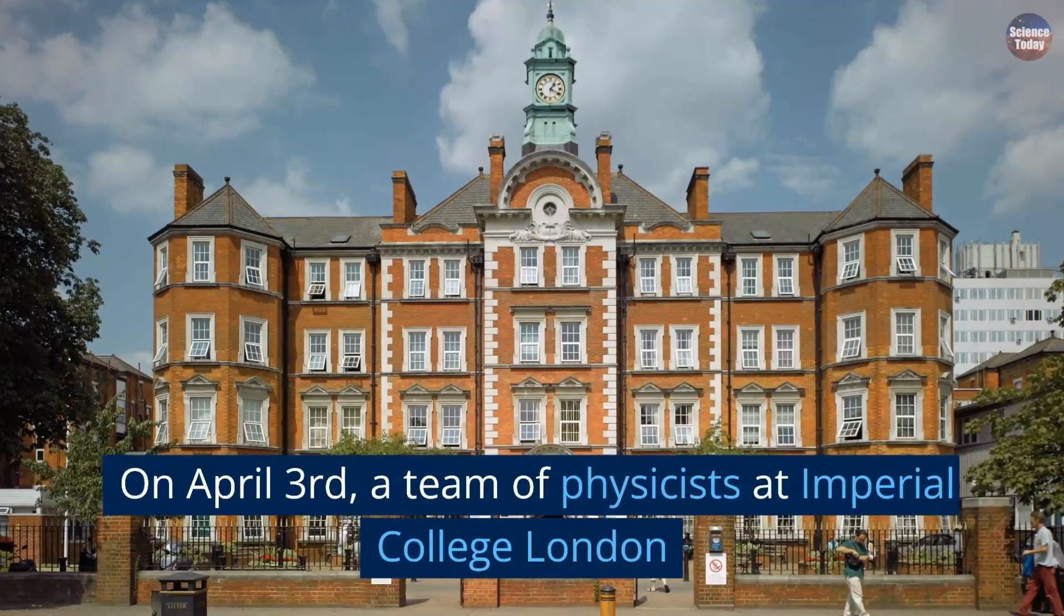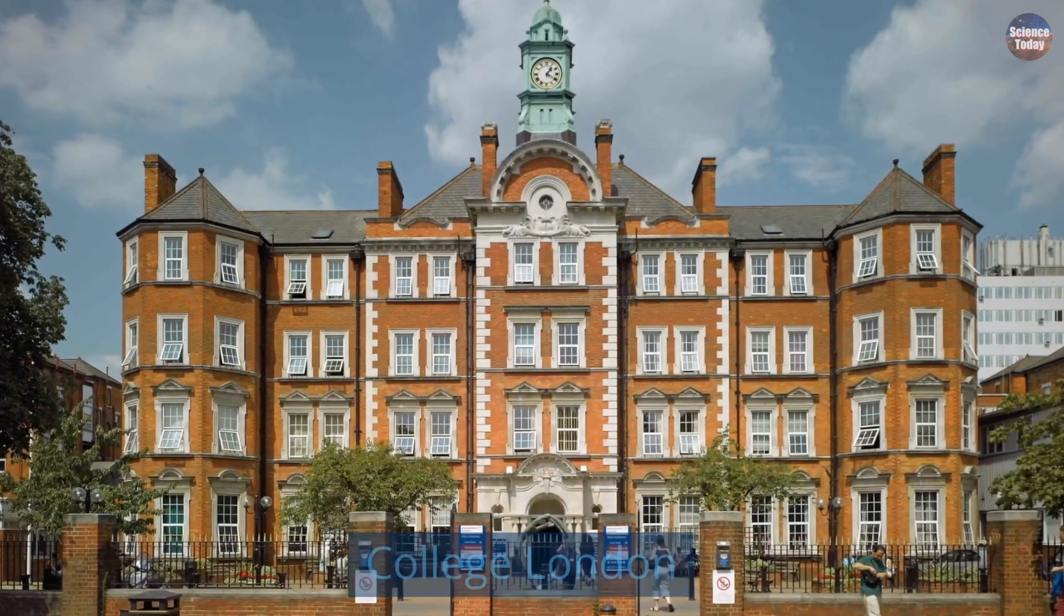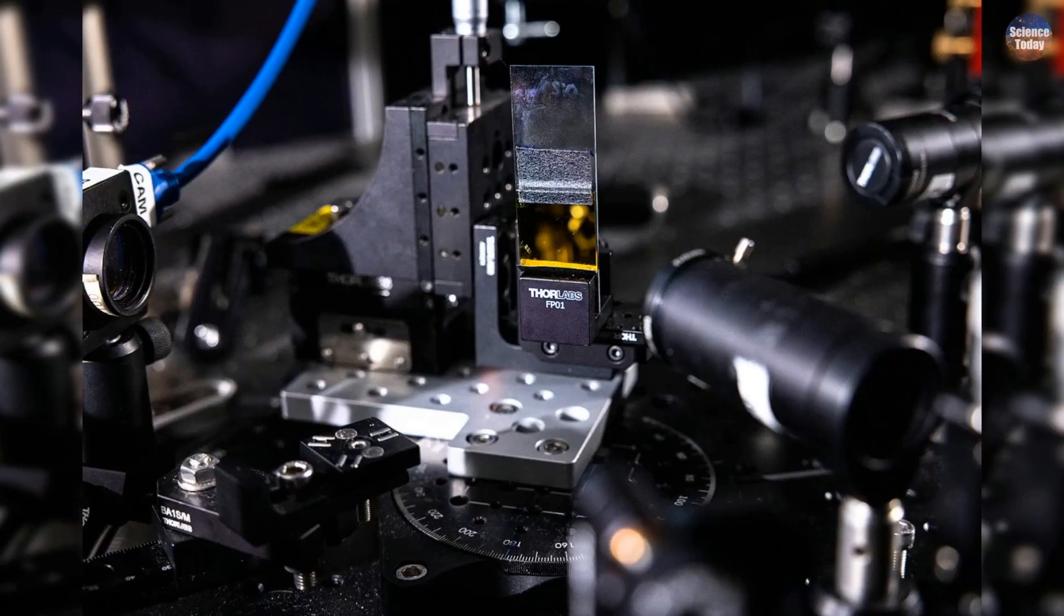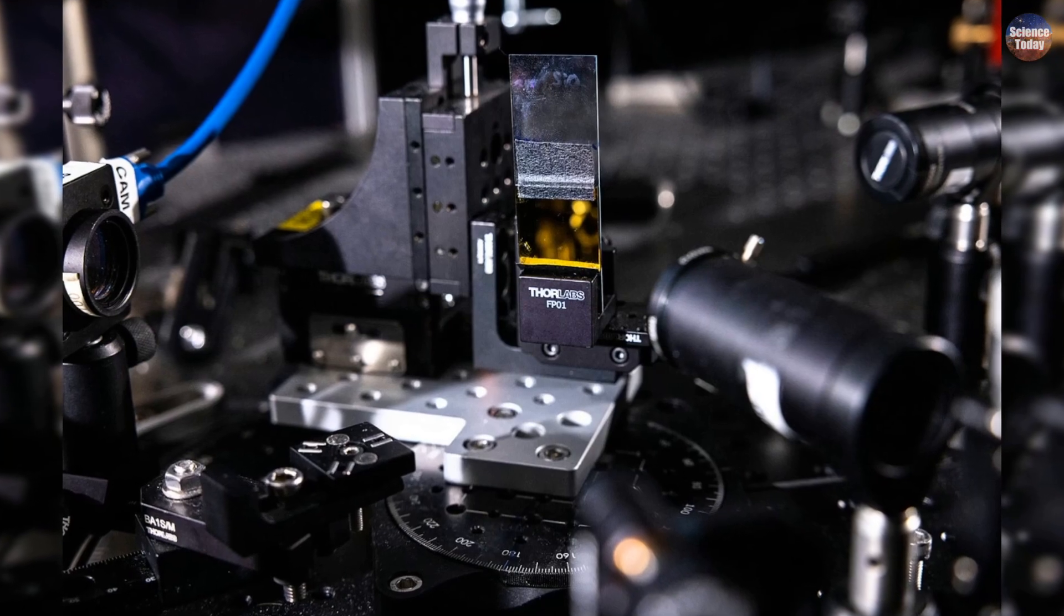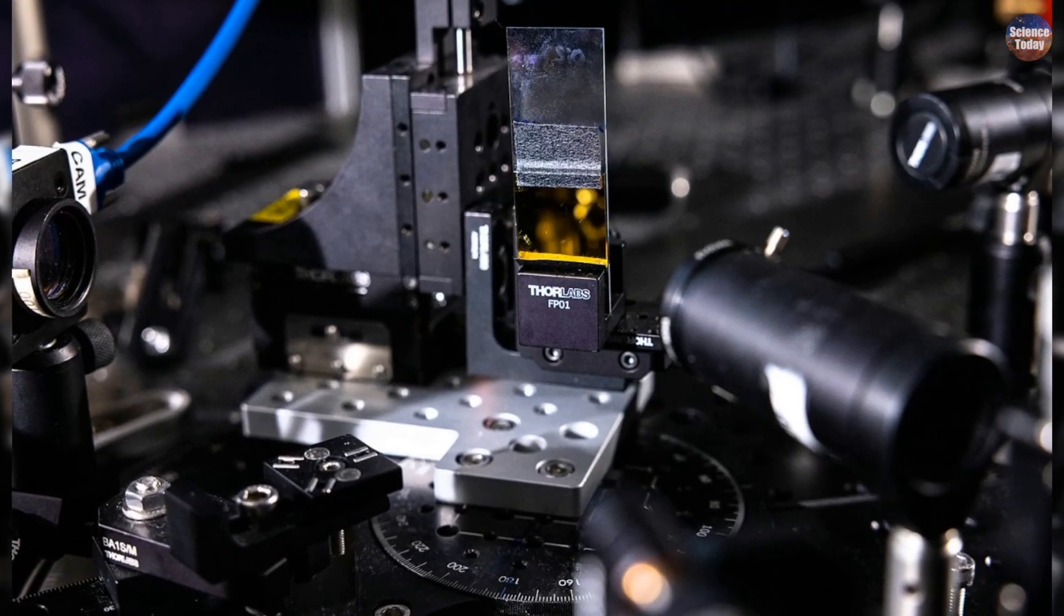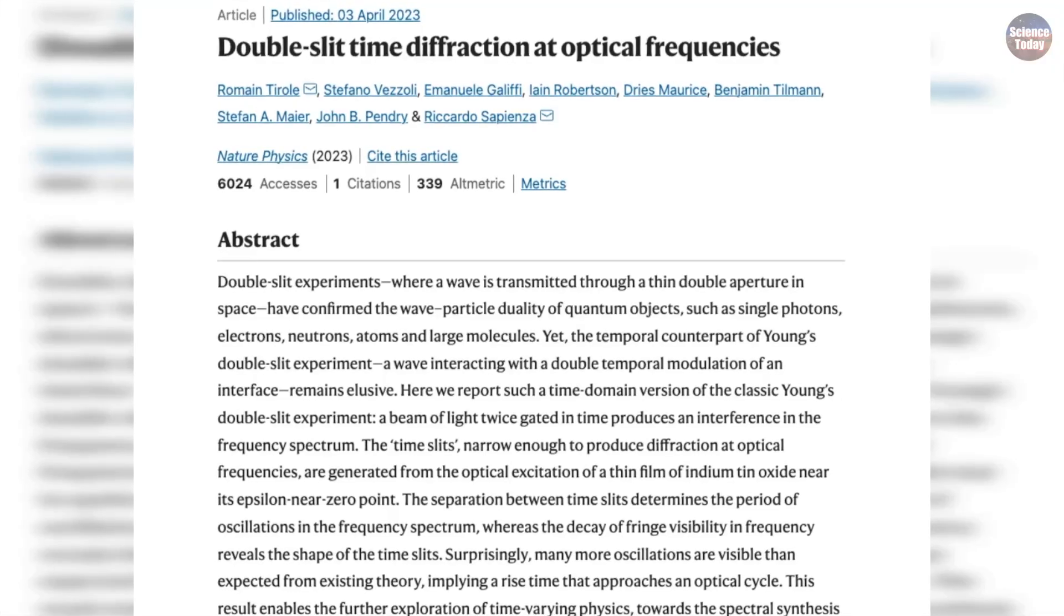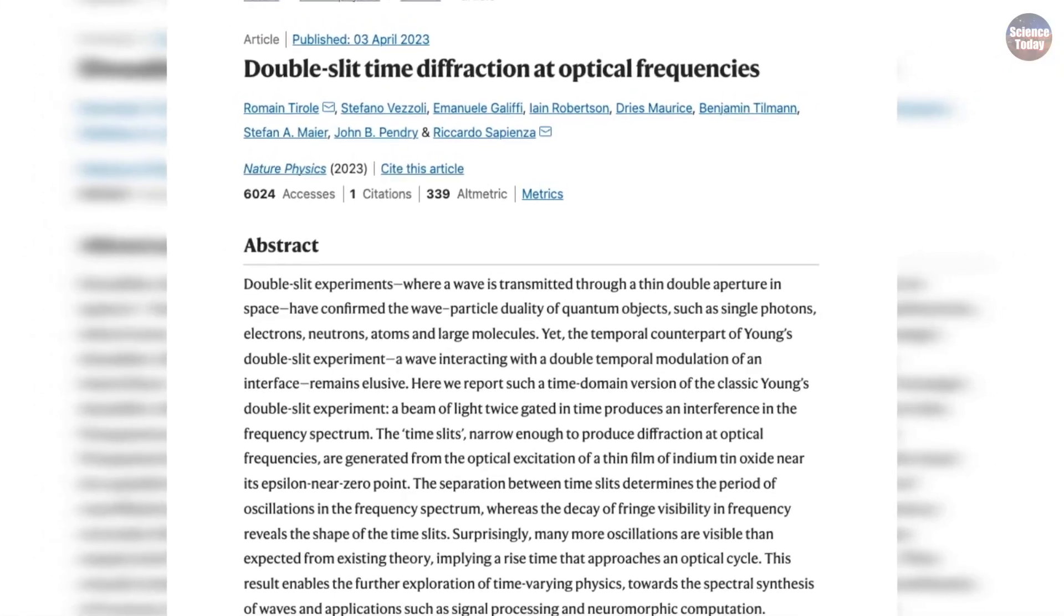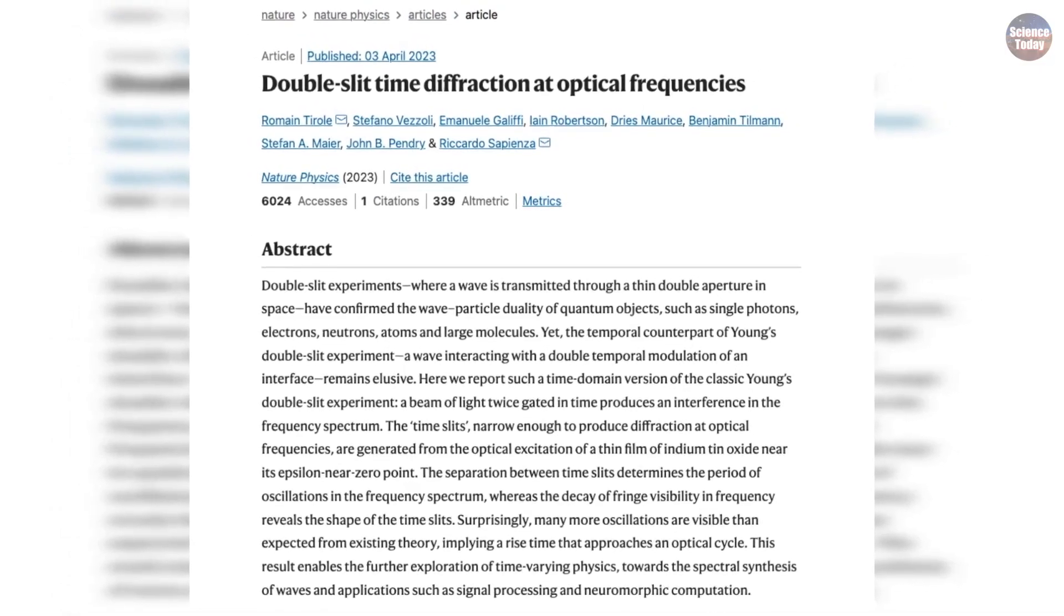On April 3rd, a team of physicists at Imperial College London achieved the extraordinary. They successfully demonstrated that light could exhibit wave-like properties in the time domain through a temporal double-slit experiment. The findings were published in Nature Physics, marking a significant milestone in our understanding of time and its relationship with the other dimensions.